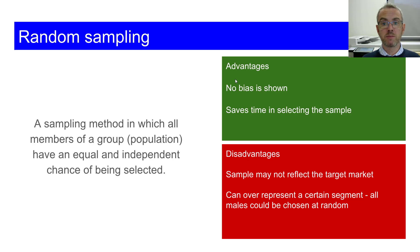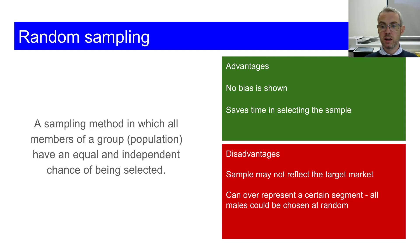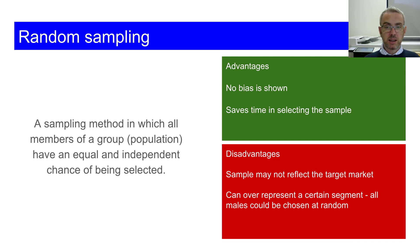The first one is completely random sampling. It's a sampling method in which all members of a group, called the population, have an equal and independent chance of being selected. The way they used to do it was just go through a phone book or a directory, basically just go through a list of people and pick names out at random — not looking at particular market segments, not looking at ages, not looking at anything at all. Another way of looking at it, it's kind of like a lottery: you put a set amount of balls in and just pick them out.